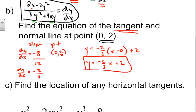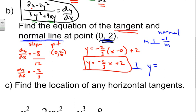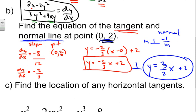Next we find the normal line. The normal line is perpendicular to the tangent line. Perpendicular lines have slopes that are opposite reciprocals of each other. So using the same point (0, 2) but with slope 3/2 (the opposite reciprocal of negative 2/3), our normal line is y equals 3/2 x plus 2.